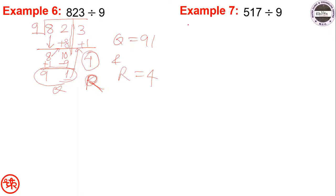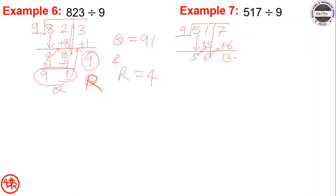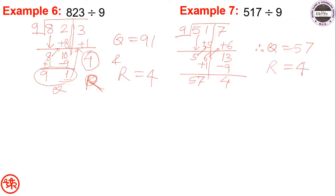Next example: 517 divided by 9. Draw vertical line then horizontal line. Write 5 below 5, add 5 to get 6, add 6 to get 13. Since 13 is greater than 9, subtract 9: 13 minus 9 is 4. Therefore quotient equals 57 and remainder equals 4.